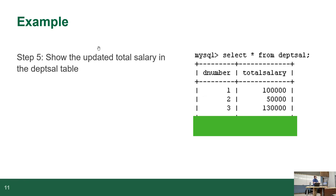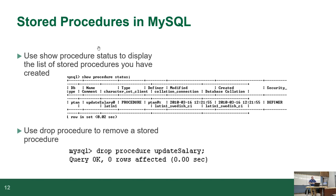If you did a SELECT from the department salaries, you'd see that the salaries have updated. There's a command called SHOW PROCEDURE STATUS that will display the list of stored procedures you've created. At the command line there's no easy way to see the code of the procedure; MySQL Workbench has tools to extract it. If you want to drop a procedure, it's DROP PROCEDURE — whatever it's called. Just like DROP TABLE.